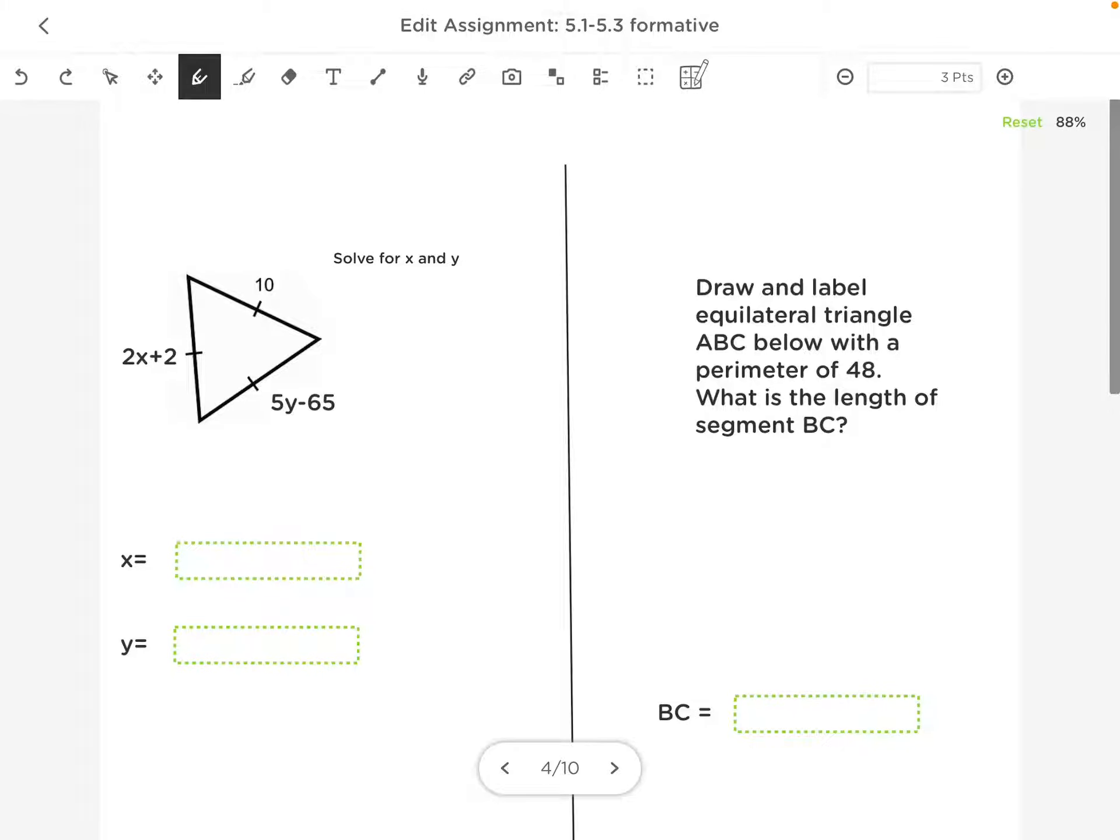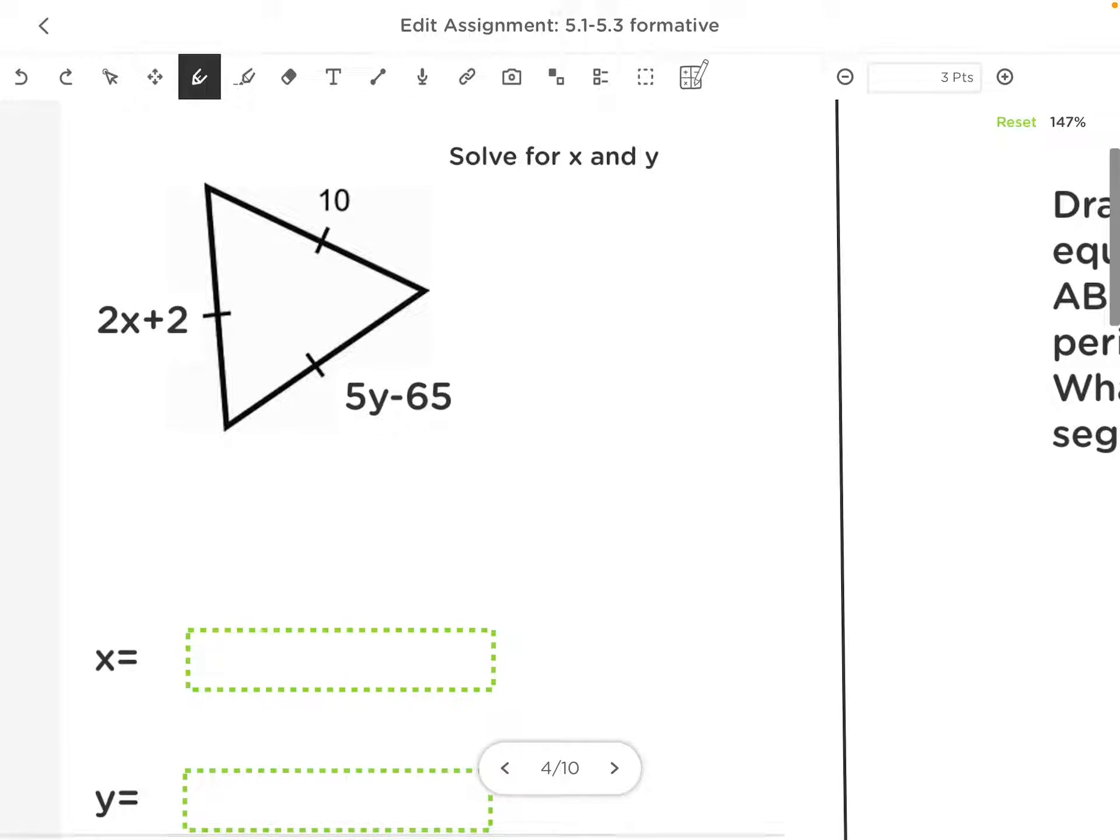This slide is talking about equilateral triangles. Equilateral means that all of the sides are the same length as indicated by the slashes. That also means all the angles are the same. And since they have to add up to 180, 180 divided by 3 would be 60, meaning all the angles are 60.